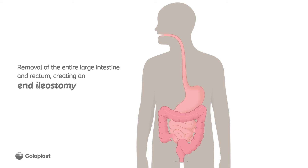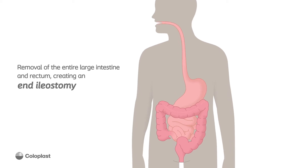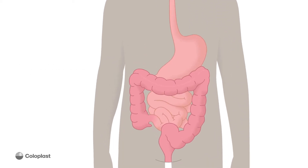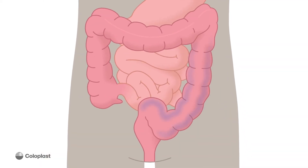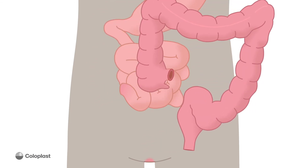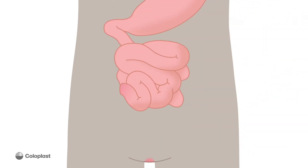This video explains how the entire large intestine and the rectum are removed and an ostomy is made from the small intestine. First, the entire large intestine and the rectum are removed. Then an end ileostomy is made and the anal opening is closed.